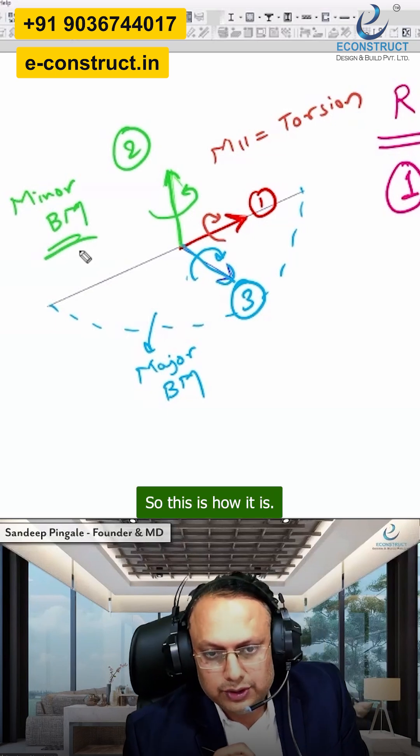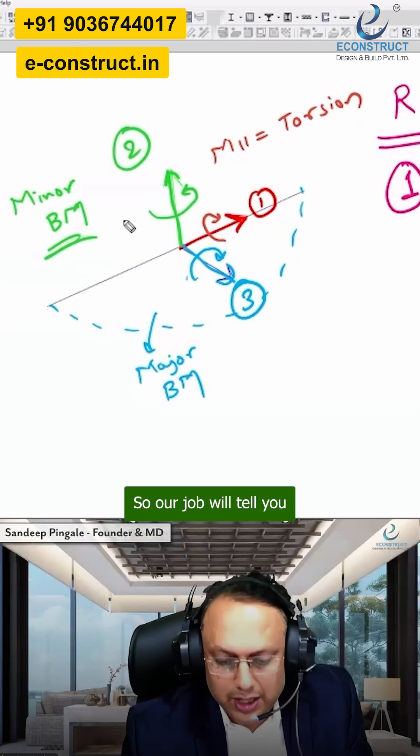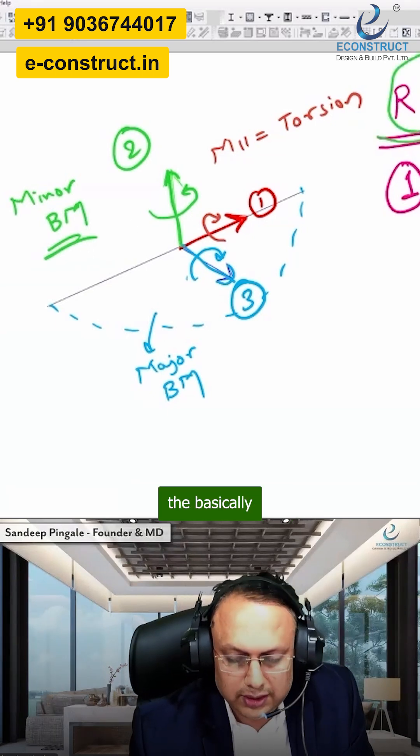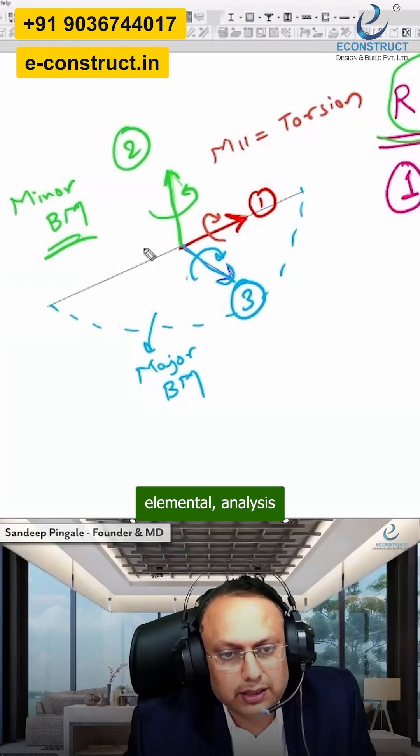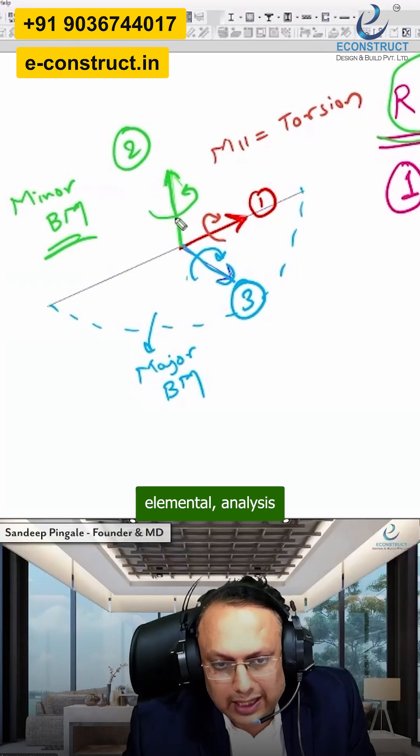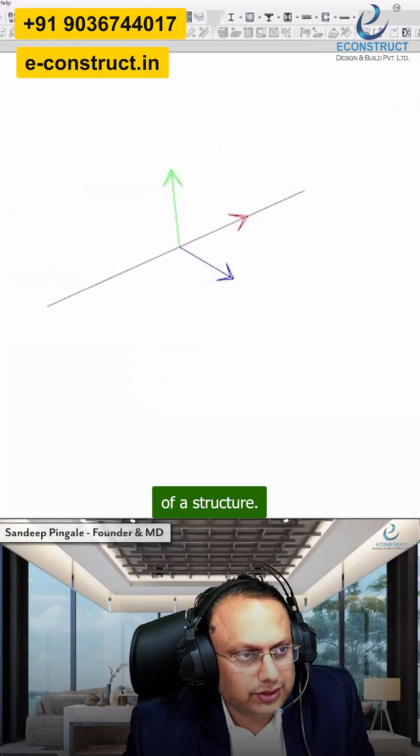Understood? So this is how it is. RGB will tell you basically the fundamental elemental analysis of a structure, right?